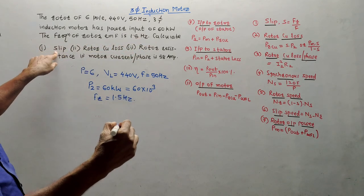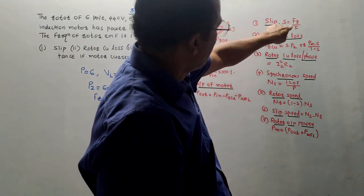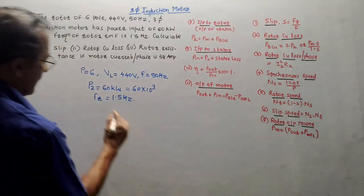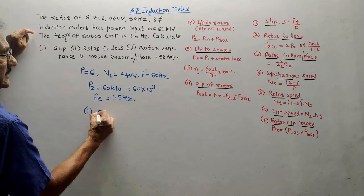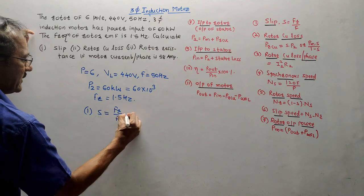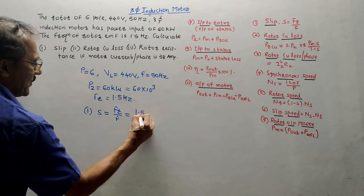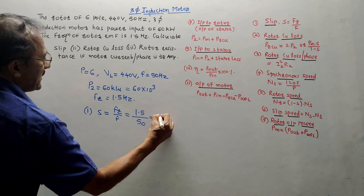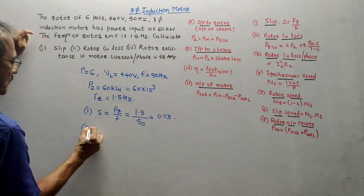Calculate the first part: slip. There are ready-made formulae. Slip is denoted by S, which equals FR upon F. Simple logic — S = FR / F. All values are known: FR is 1.5 upon F is 50, so the answer of slip will be 0.03. This is the answer of the first part.